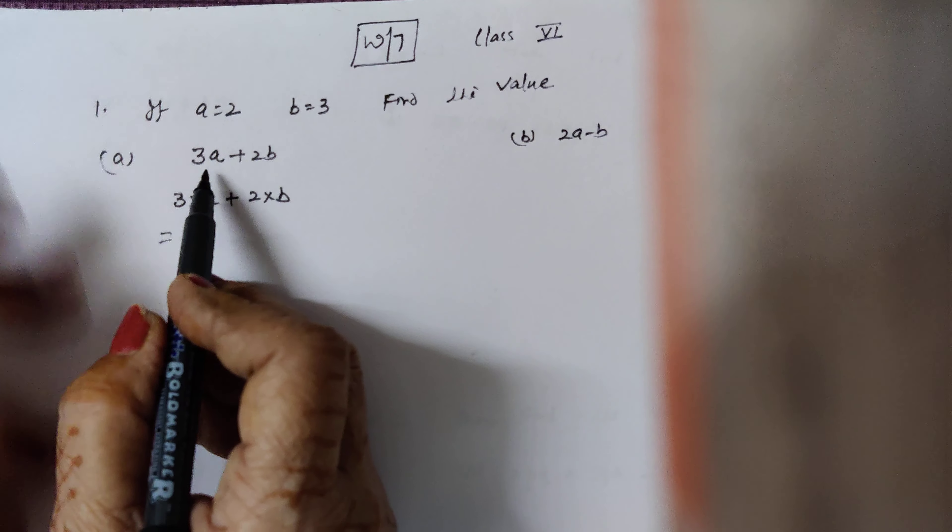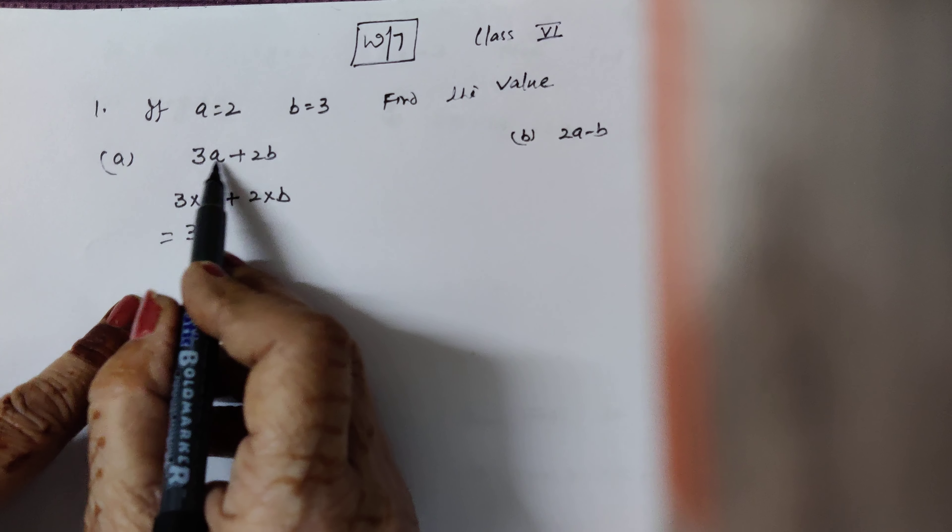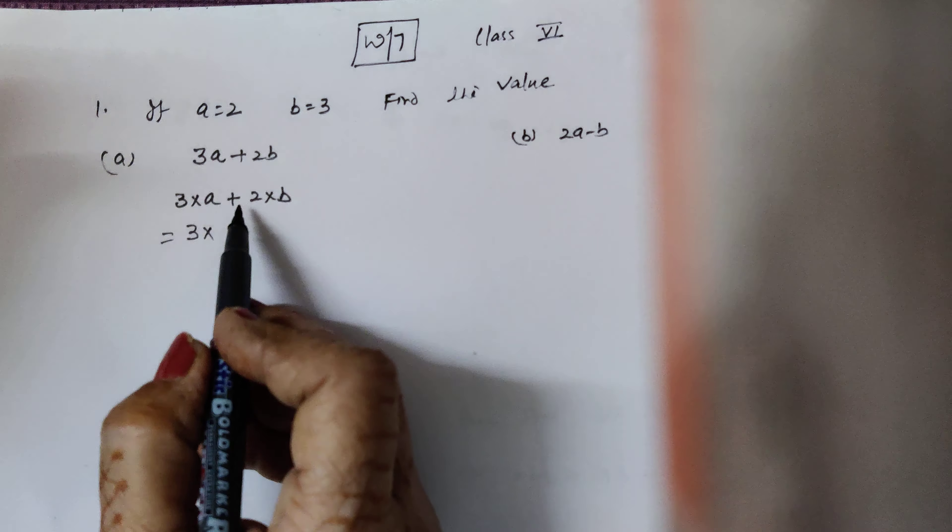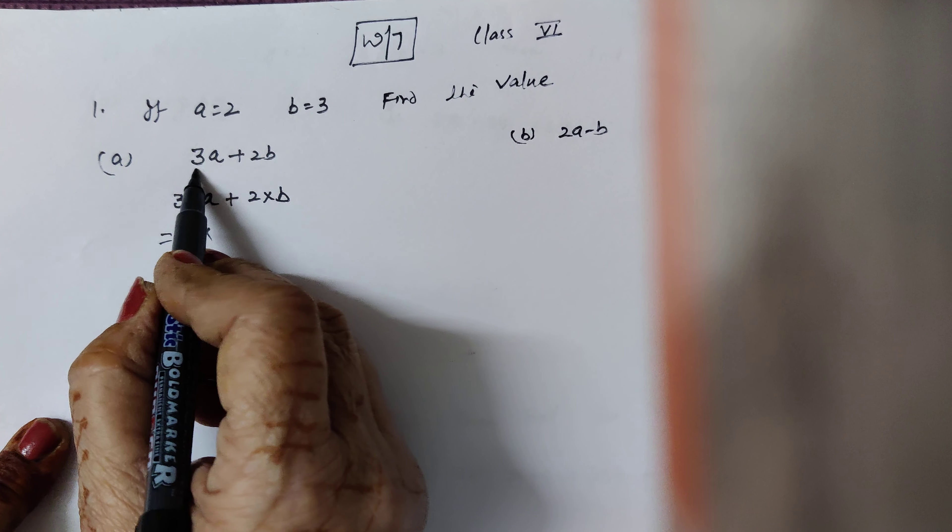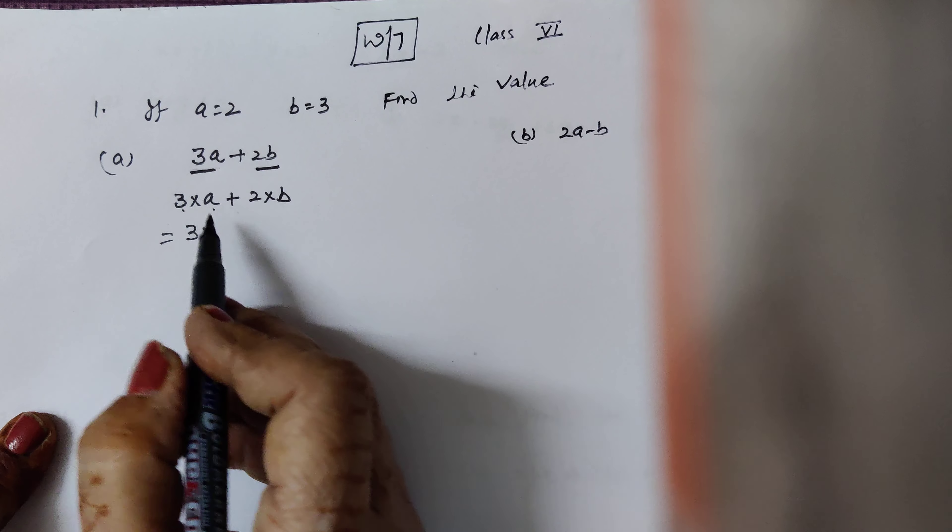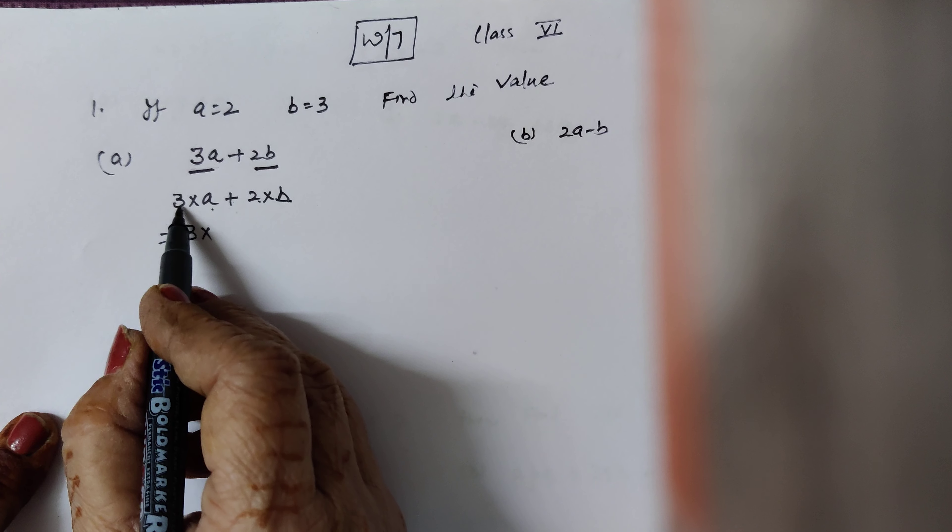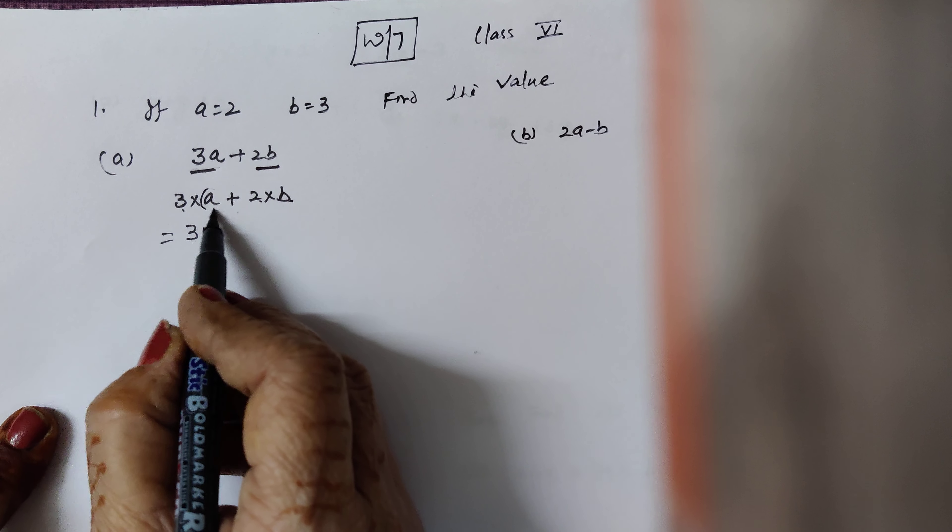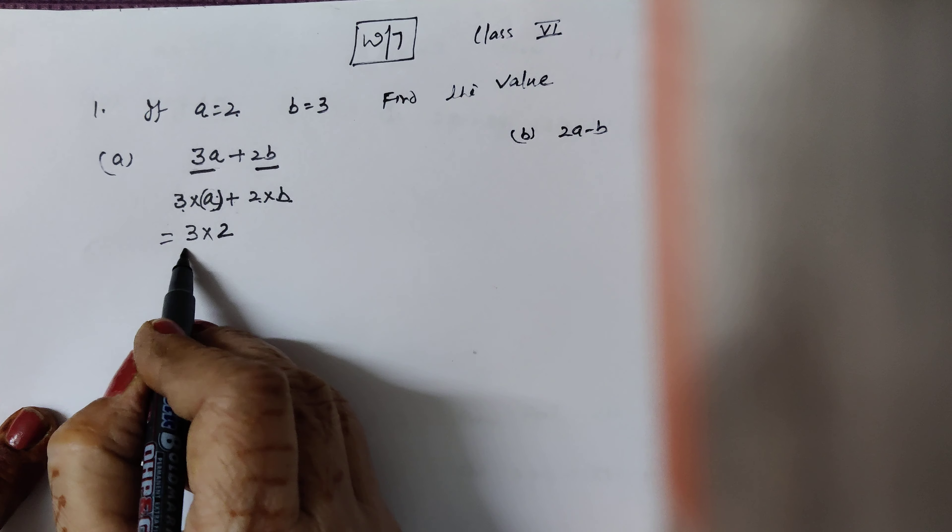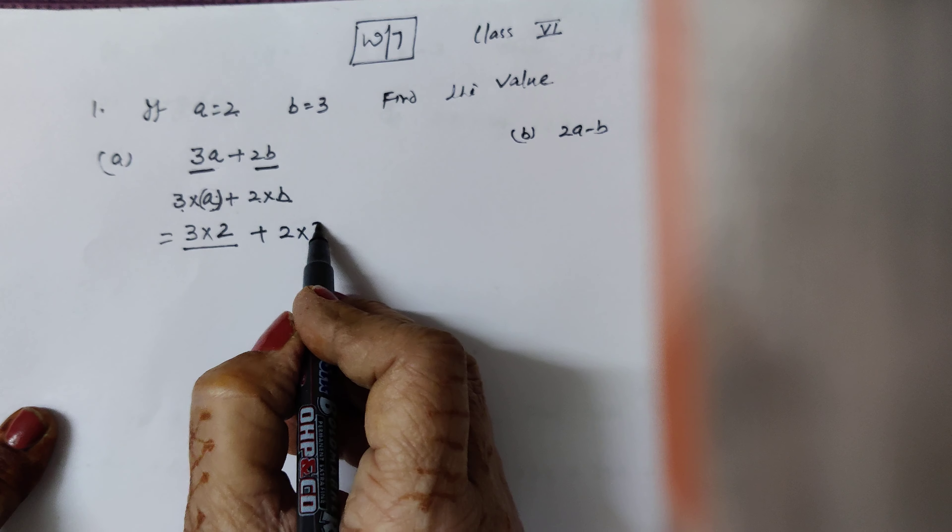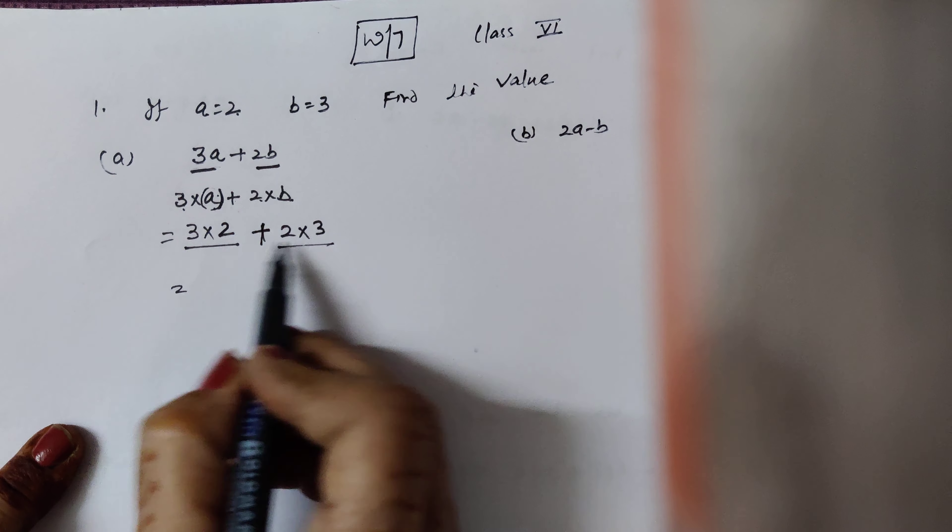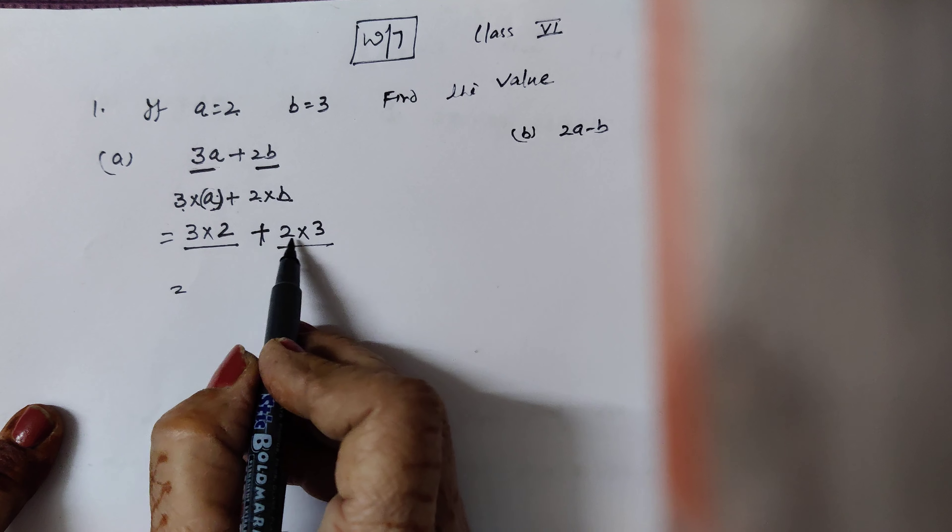So sum number 1 is here. There is given A is equal to 2, B is equal to 3. Find the value of. So here it is 3A plus 2B. 3A plus 2B. Plus or minus, they are separating the terms. So you have 2 houses, 1 is 3A, 1 is 2B. So now 3A, at the place of A, I am filling A is equal to 2. So here we have 3 times 2, plus 2 times B, at the place of B there is 3.